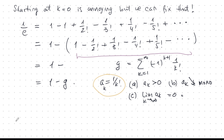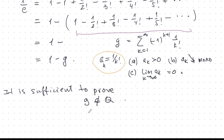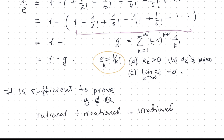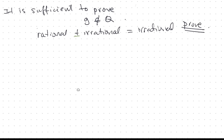It's now sufficient to prove that G is irrational. Why? Because you can't have an irrational plus a rational give you a rational. If G is not in Q, and 1 is rational, then 1 minus G must also be not in Q. So all we need to do is prove that G is irrational, and then it follows that 1 over e and hence e itself are also irrational.